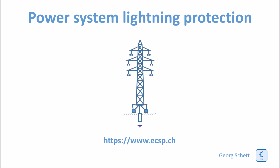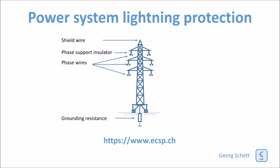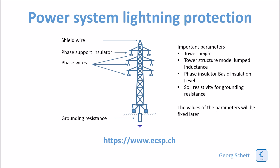Let's quickly have a look at the basic structure of a power line. Here we have a tower, and on top of the tower you have a shielding wire. Then you have phase support insulators, phase wires, and a grounding resistance. There are some important parameters listed here as well.